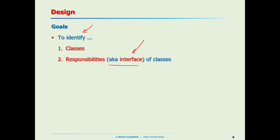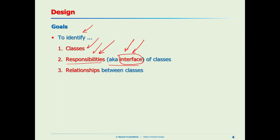The interface exposes the public methods — those methods that are visible. Here we might be looking at the API at a higher level. But bottom line, we are looking for the interface or API of the software. So: identify classes, identify the responsibilities or the interface or the API, and also find the relationship between the classes.